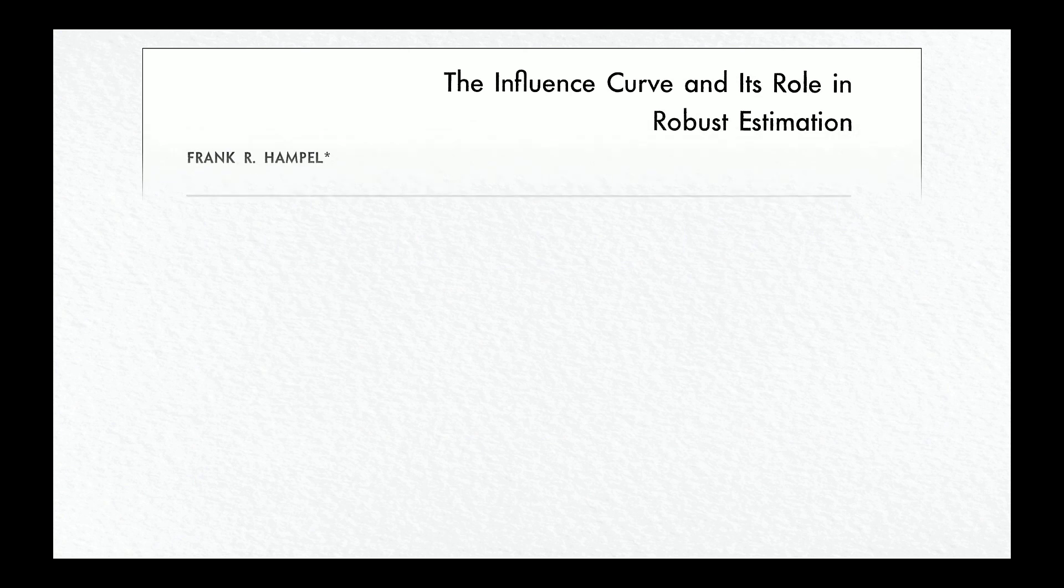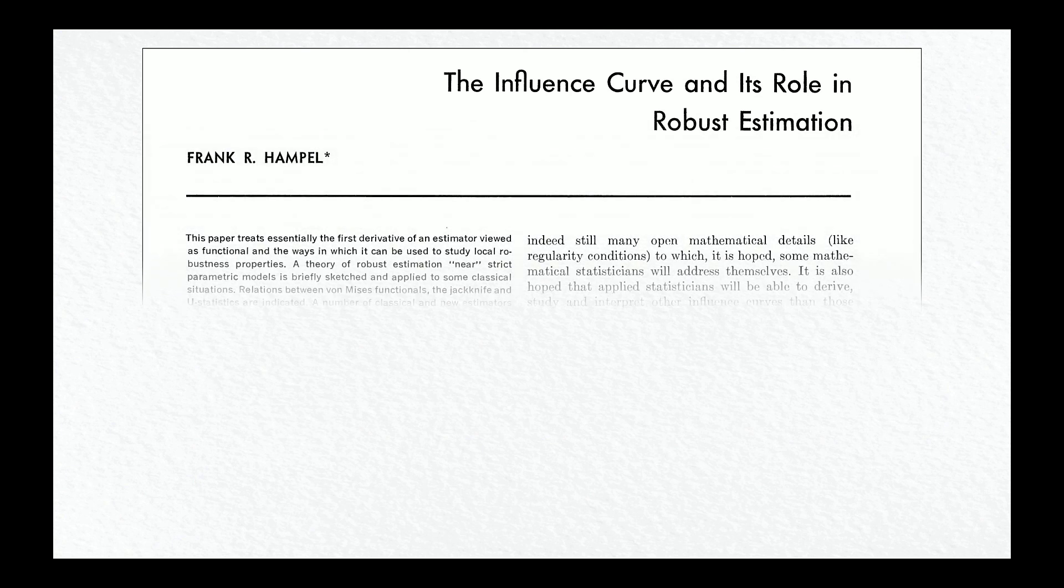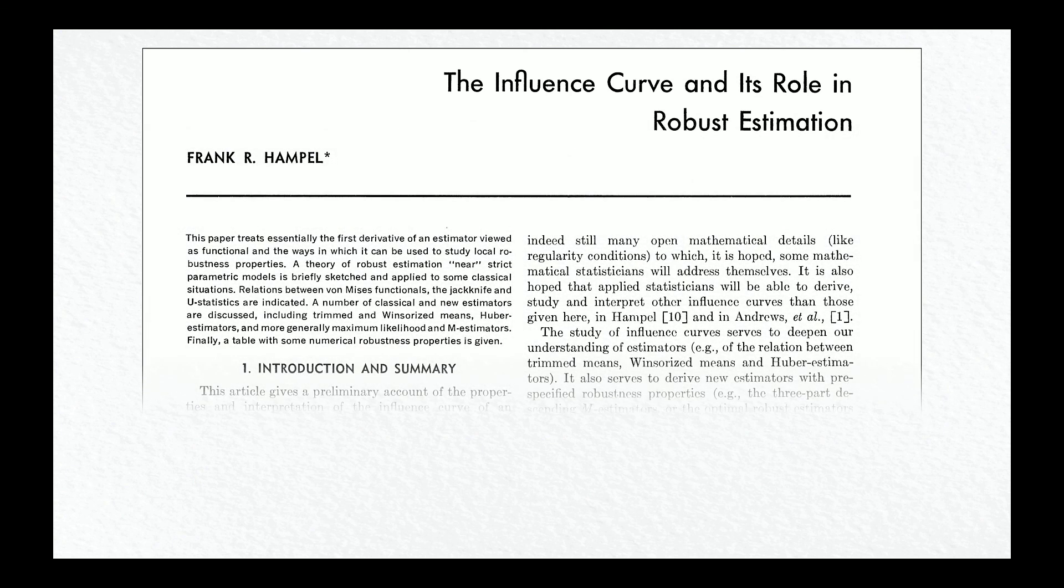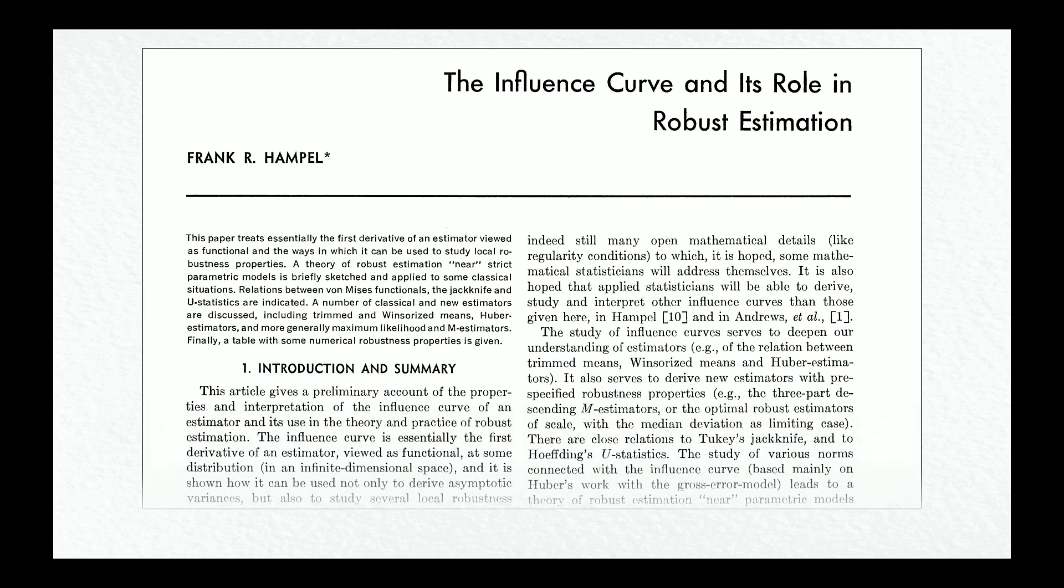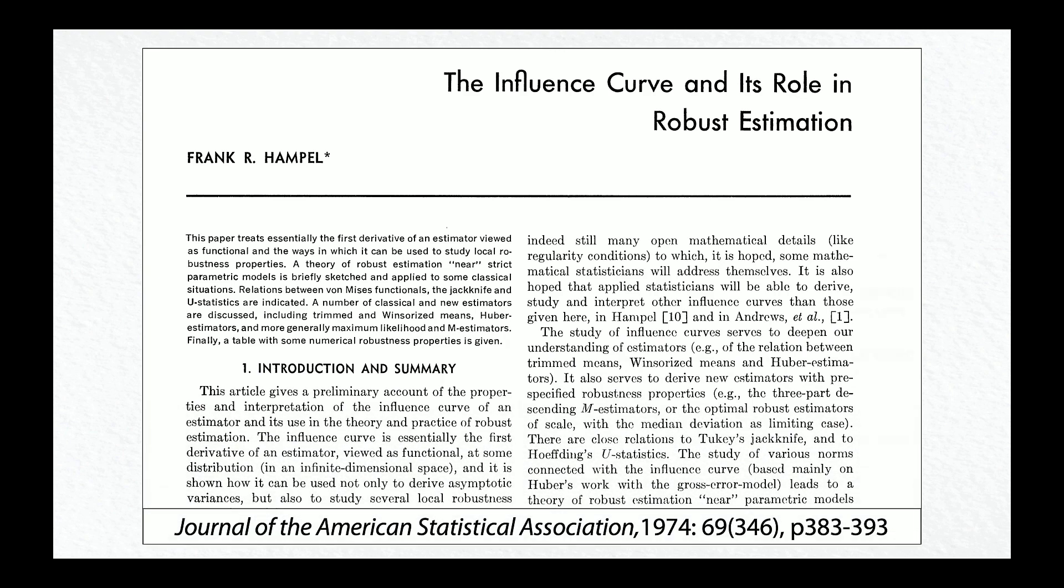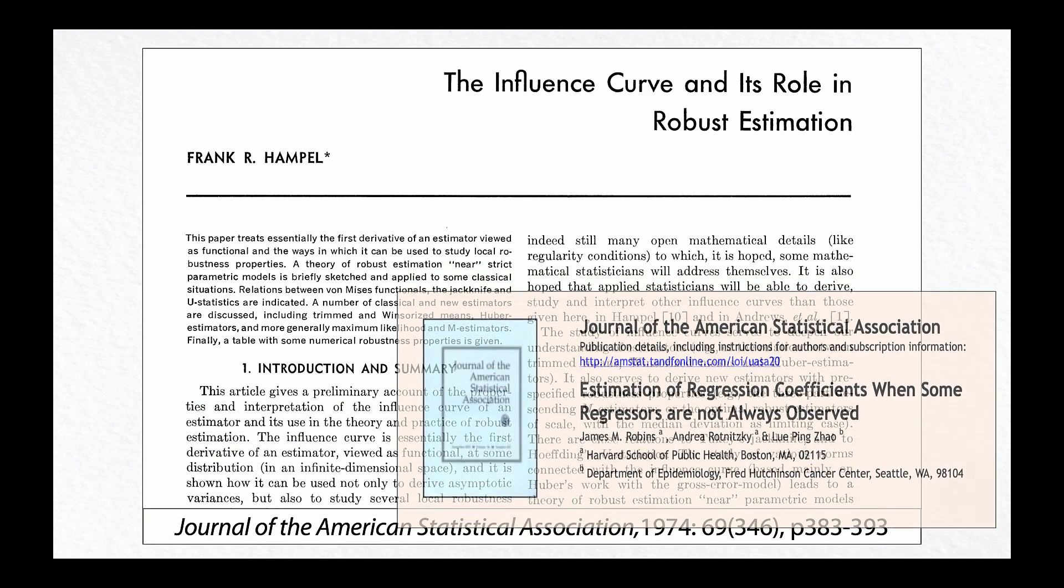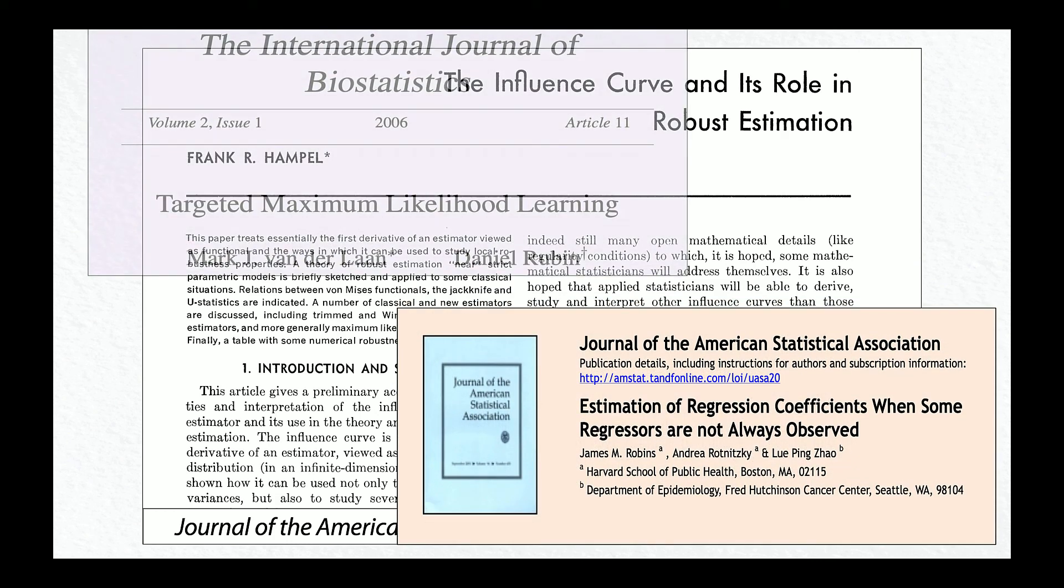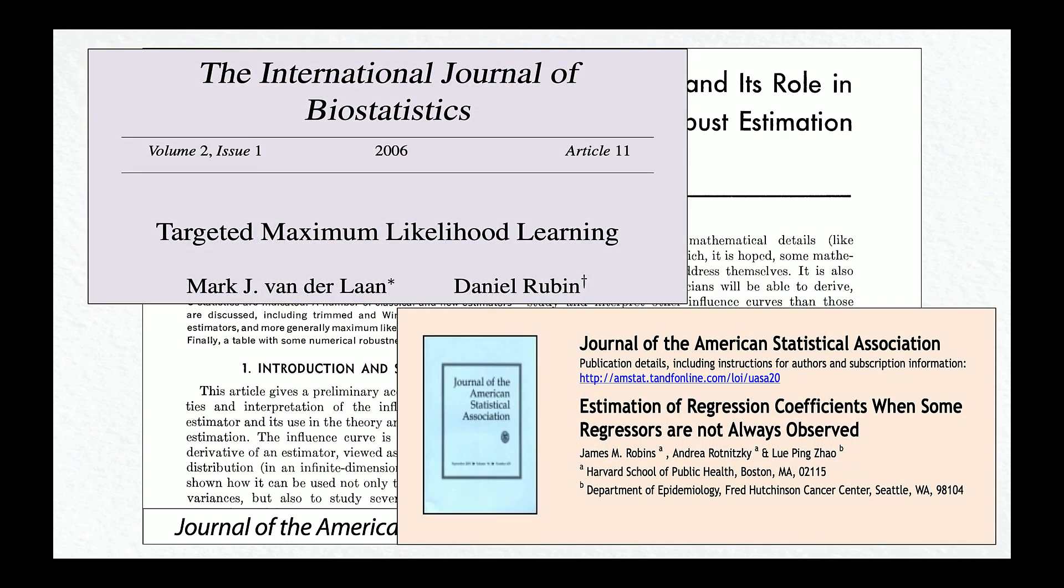Hample also showed how an estimator's influence curve relates to its asymptotic variance. Double robust estimators of causal effects, first developed by Robbins and Ratnitzky, are based on influence curves. Influence curves are also at the heart of targeted maximum likelihood estimation, or TMLE.